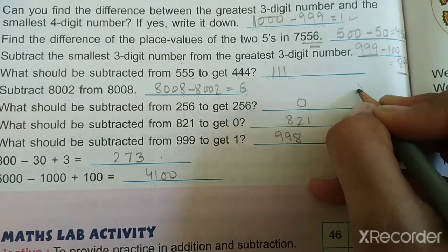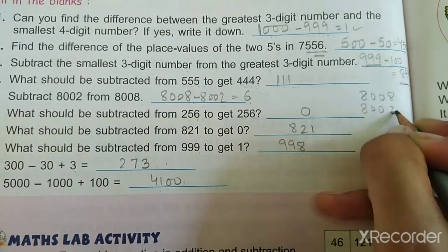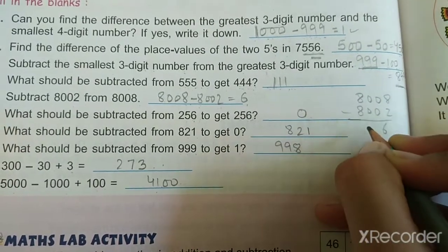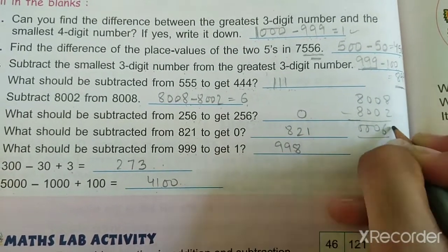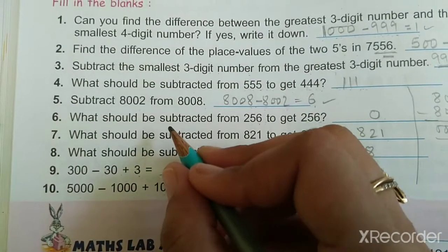Subtract 8002 from 8008. We can see 8008 minus 8002, so it will become 6. So 6 is the answer.